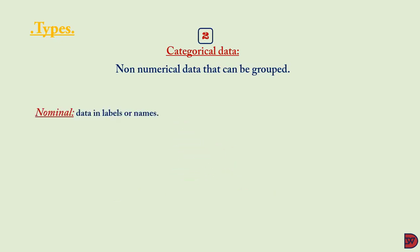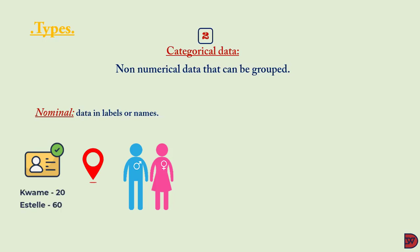For categorical data we have two types. Nominal, which is data that are captured in labels or names—if you're looking for the names of people in the classroom, locations of people, gender. Nominal data is qualitative as well as quantitative. If you get the names, you can determine the number of people who are called Kwame or Estelle. If you get a location, you can tell the number of people within one continent or the other.